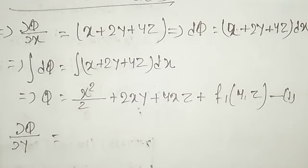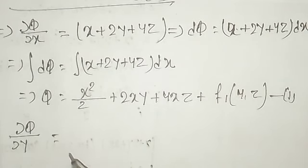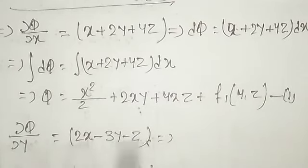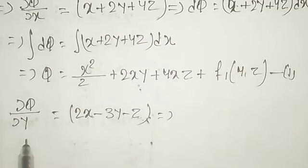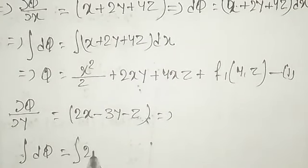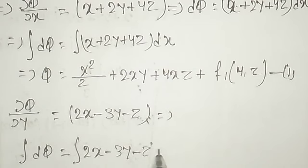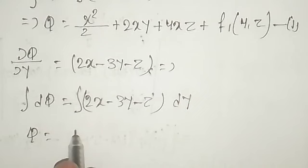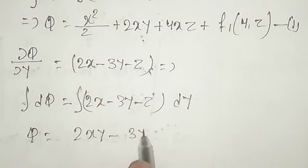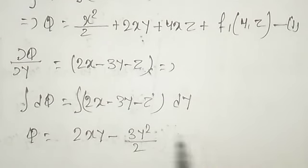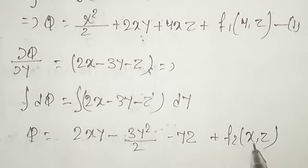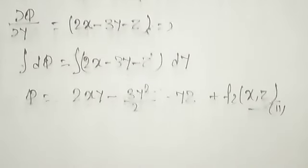Comparing the j-coefficients: ∂φ/∂y = 2x − 3y − z. Integrating with respect to y: φ = 2xy − 3y²/2 − yz + f₂(x, z), where f₂ is a function of x and z. This is equation 2.